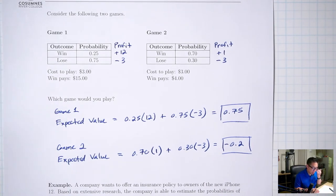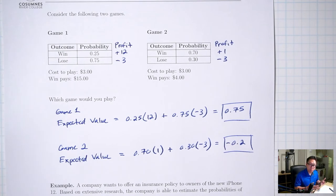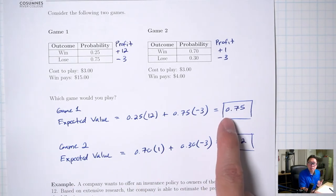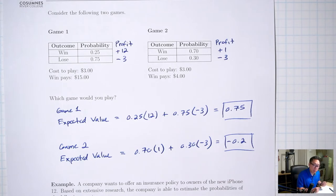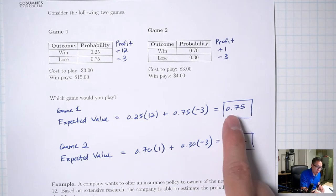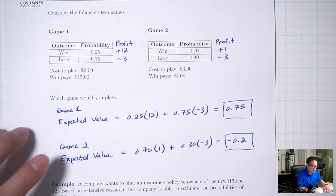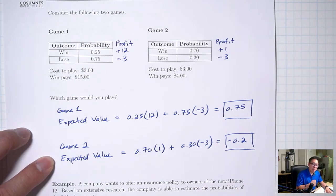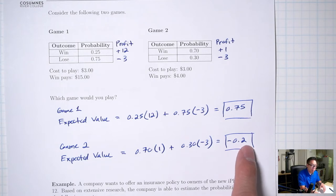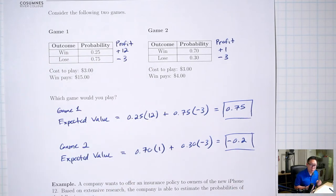What expected value is telling you is: if you play game one many thousands of times — sometimes you win, sometimes you lose — but in the long run, it averages out to winning roughly $0.75 each time you play, about 75 cents. Game two, on the other hand, if you play it many times, each time you're losing on average 20 cents. So game two you definitely don't want to play, and game one you definitely do want to play, especially over many thousands of times.